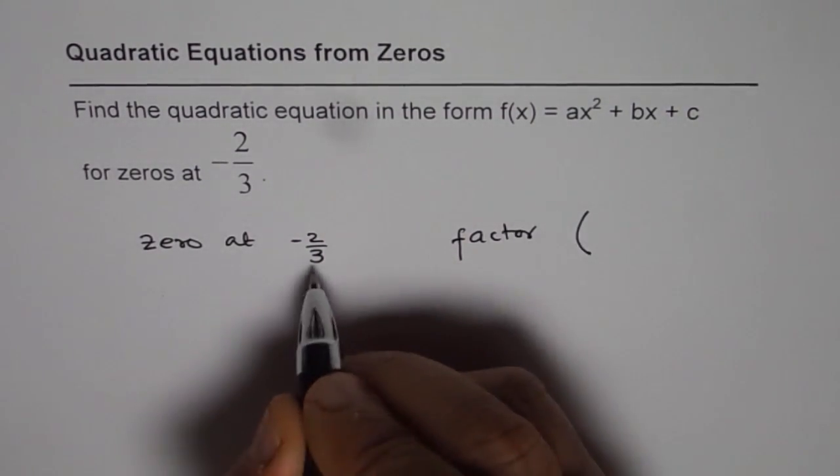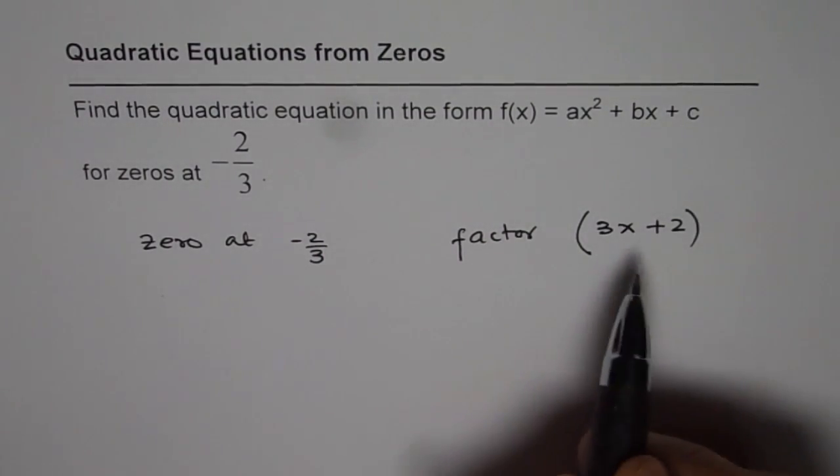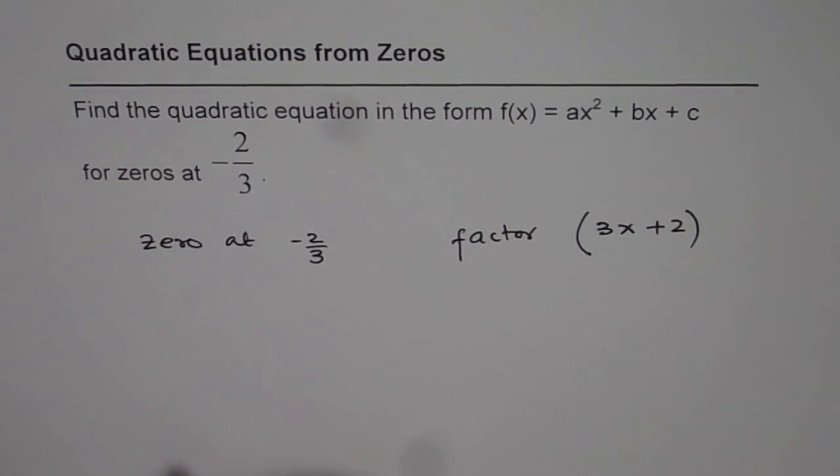Factor should be 3x + 2, right? Since this factor will be zero for x equals to -2/3.